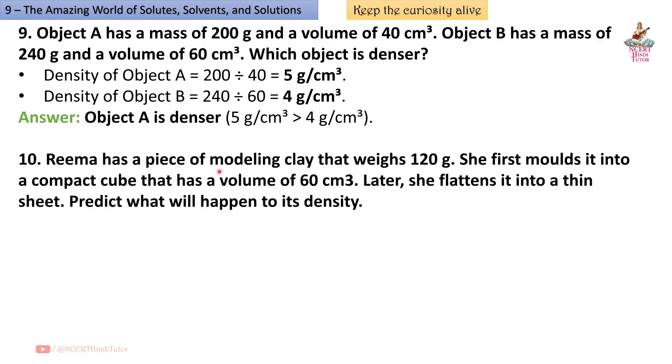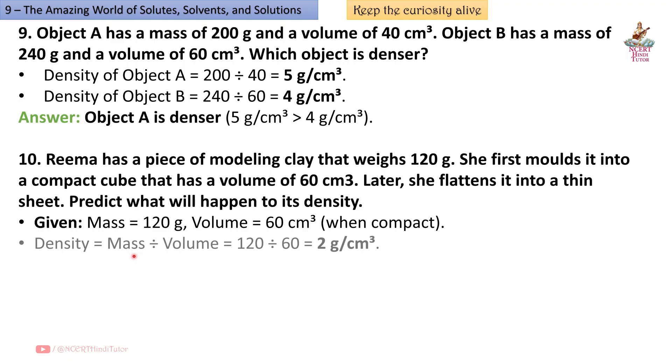Question 10: Rima has a piece of modeling clay that weighs 120 g. She first molds it into a compact cube that has a volume of 60 cm cube. Later she flattens it into a thin sheet. Predict what will happen to its density. Answer: Given mass equals 120 g, volume equals 60 cm cube when compact. Density equals mass divided by volume, so 120 divided by 60 equals 2 g per cm cube.